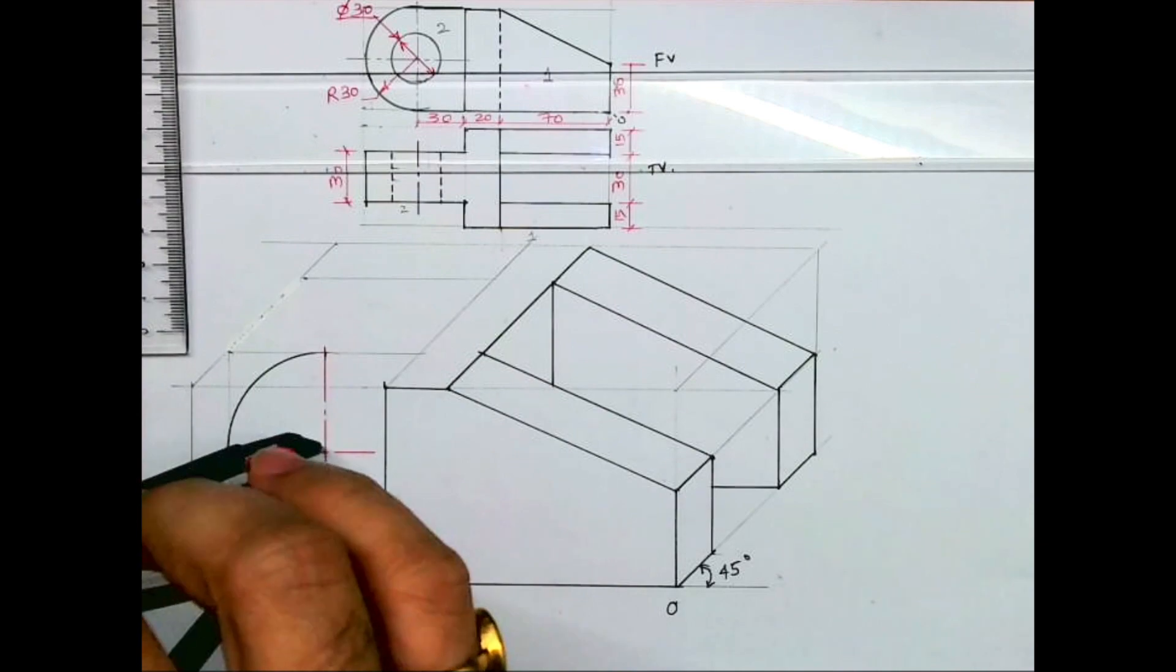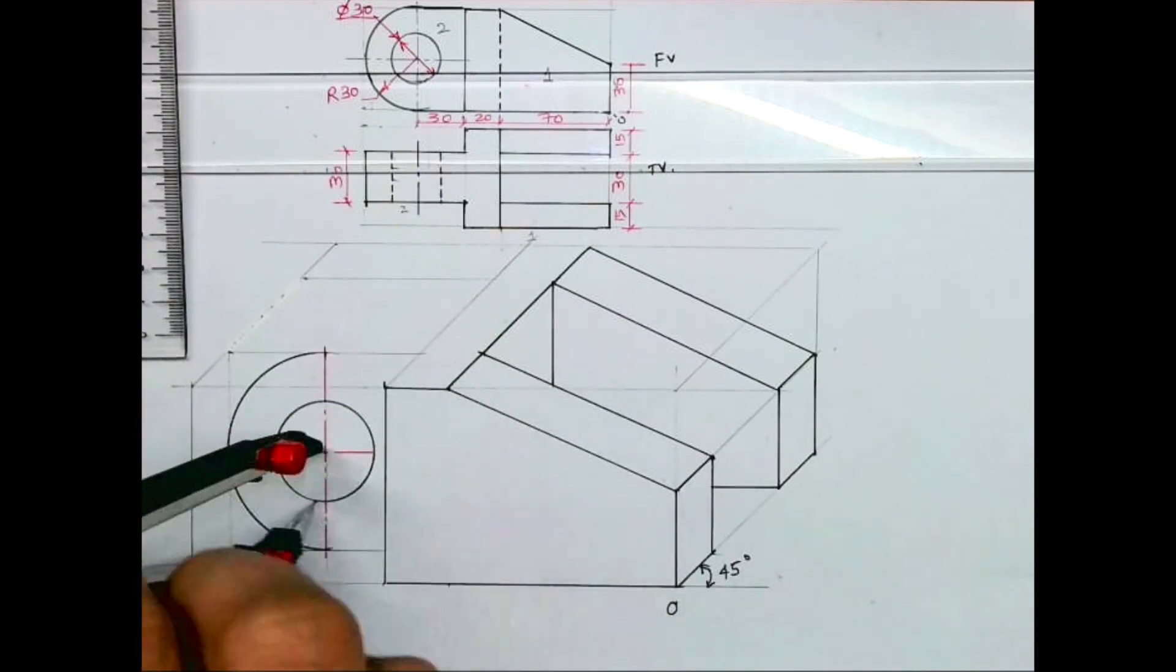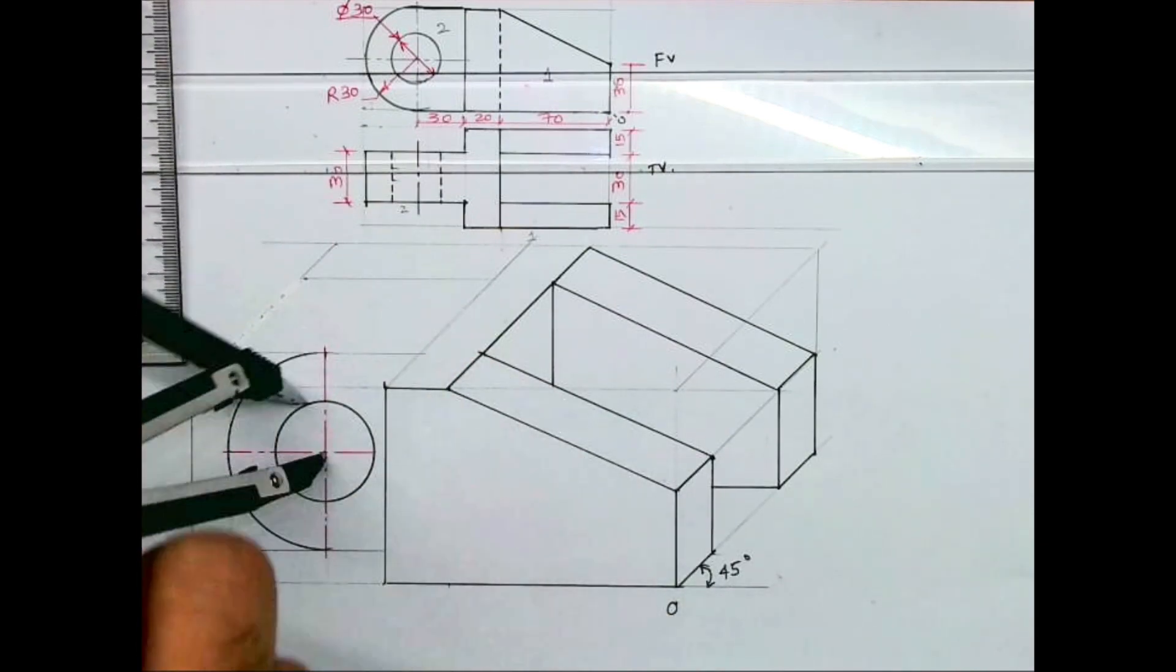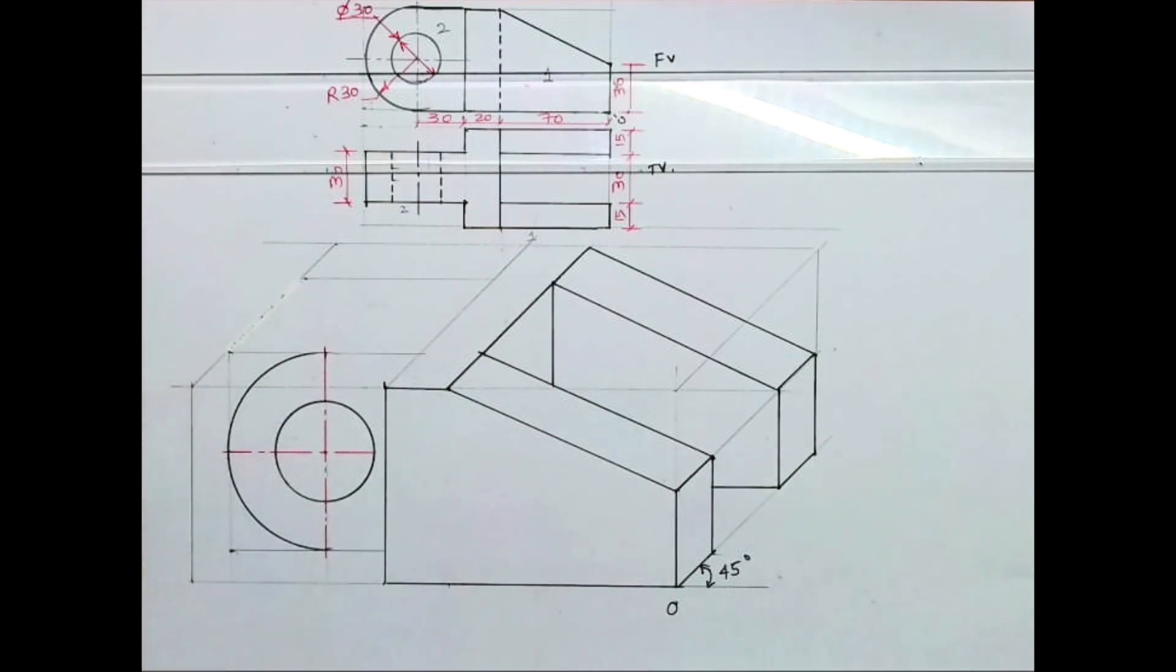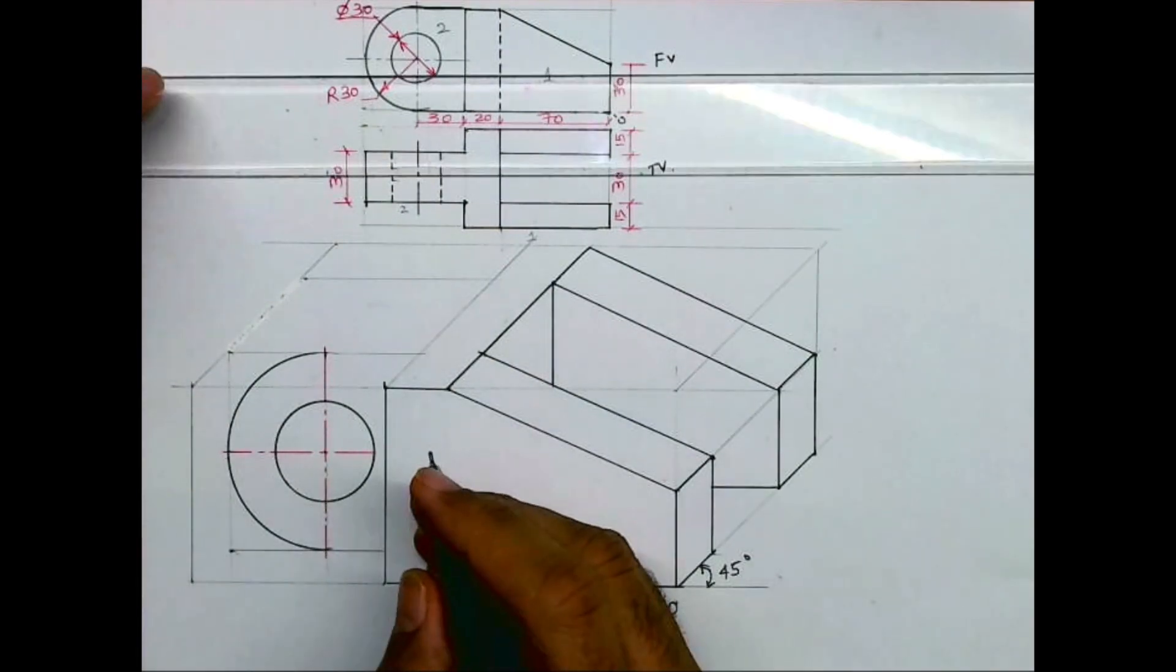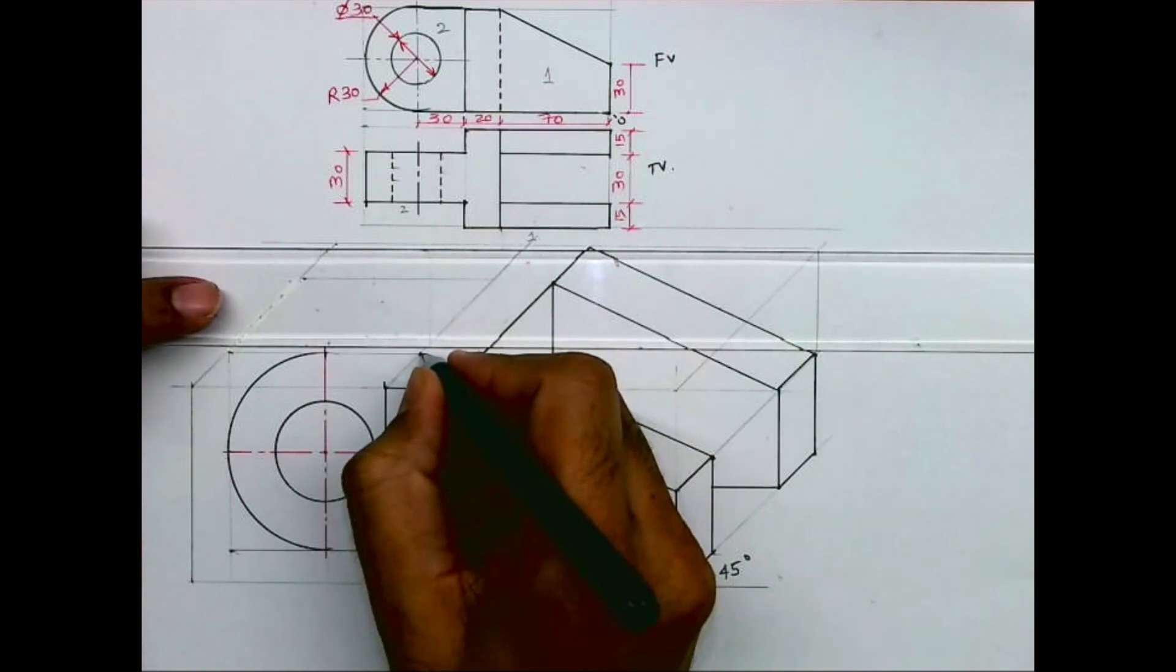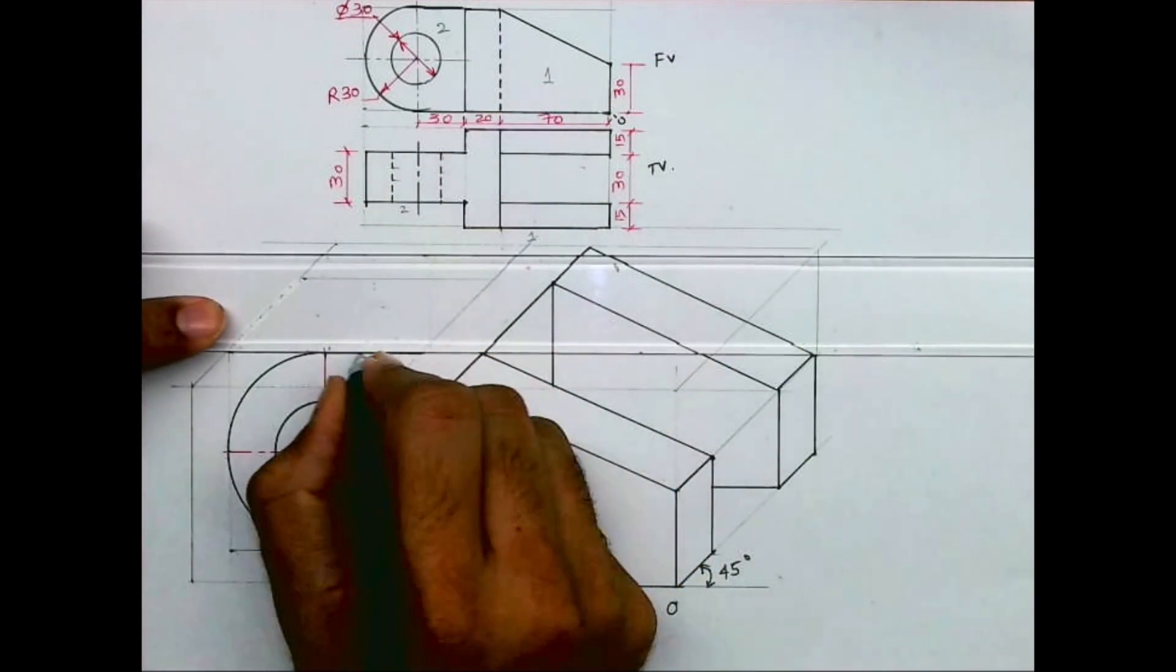Now from the same center you draw radius 15, so diameter 30. So we are done with part two. We have drawn two circles: one is radius 30 and one is radius 15. And we'll draw this line.